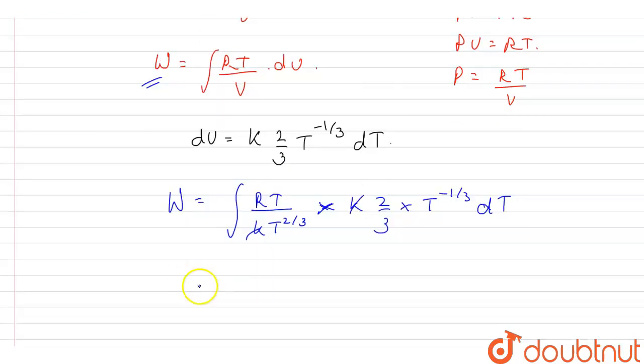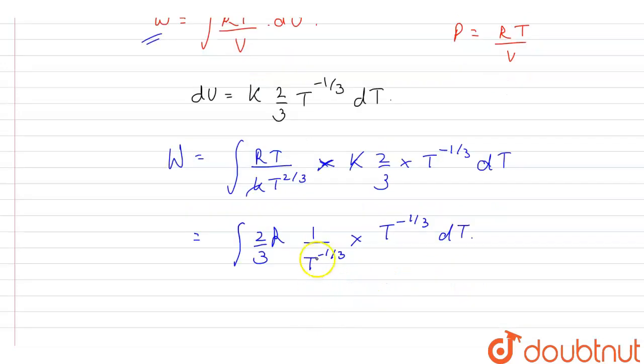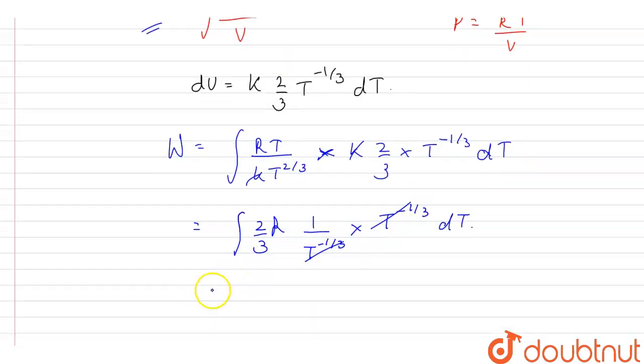So I can simplify this as integration (2/3)R × (1/T^(2/3)) × T^(-1/3) dT. This will get cancelled and we will have (2/3)R integration of dT.